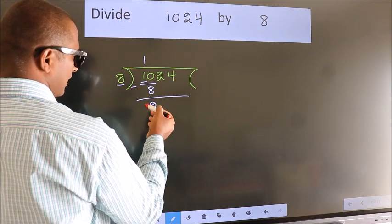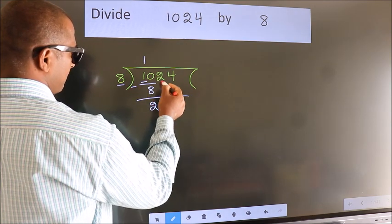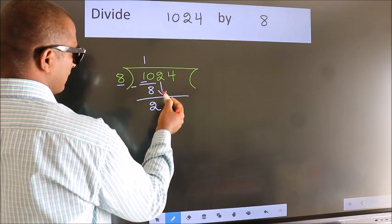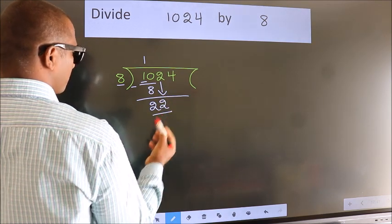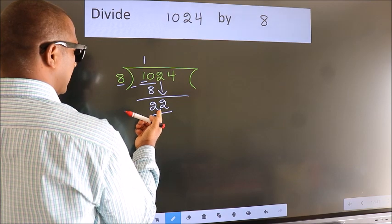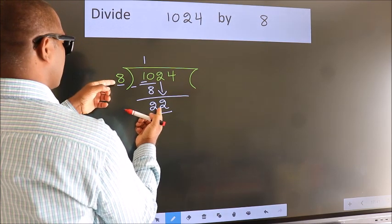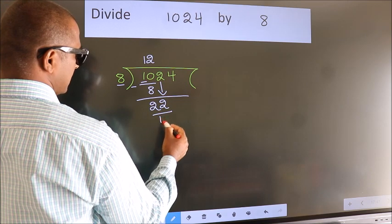We get 2. After this, bring down the beside number. So, 2 down. So, 22. A number close to 22 in the 8 table is 8 2s 16.